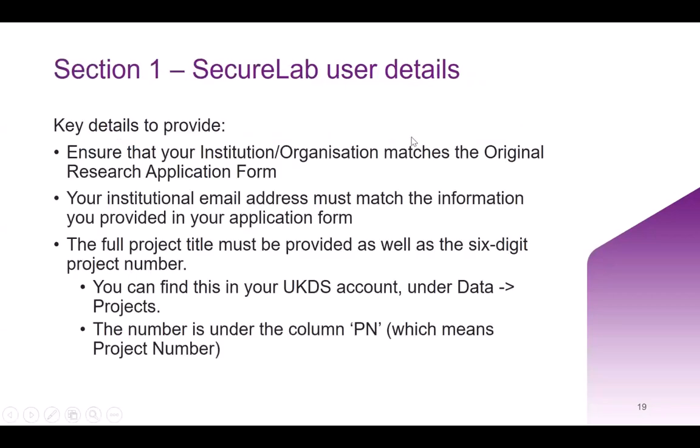We're going to go through each section of the form and what you need to include. Section one asks you to provide your SecureLab user details — your name and email address. Make sure your email matches the institution you submitted with your application. Include all project titles as well as your six-digit project number that Melissa mentioned at the start. If you have multiple SecureLab projects, make sure this request goes to the correct one.